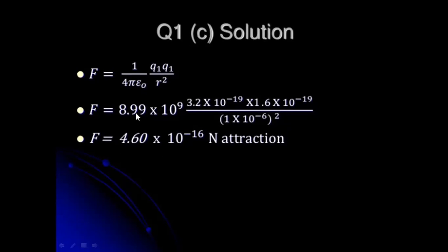For letter C, using 8.99 times 10 raised to 9, at a given distance of 1 times 10 raised to negative 6 meters, the charges are 3.2 times 10 raised to negative 19 and 1.6 times 10 raised to negative 19 coulombs. The electrical force equals 4.6 times 10 raised to negative 16 newtons. Hence, the charges are attracted to each other.